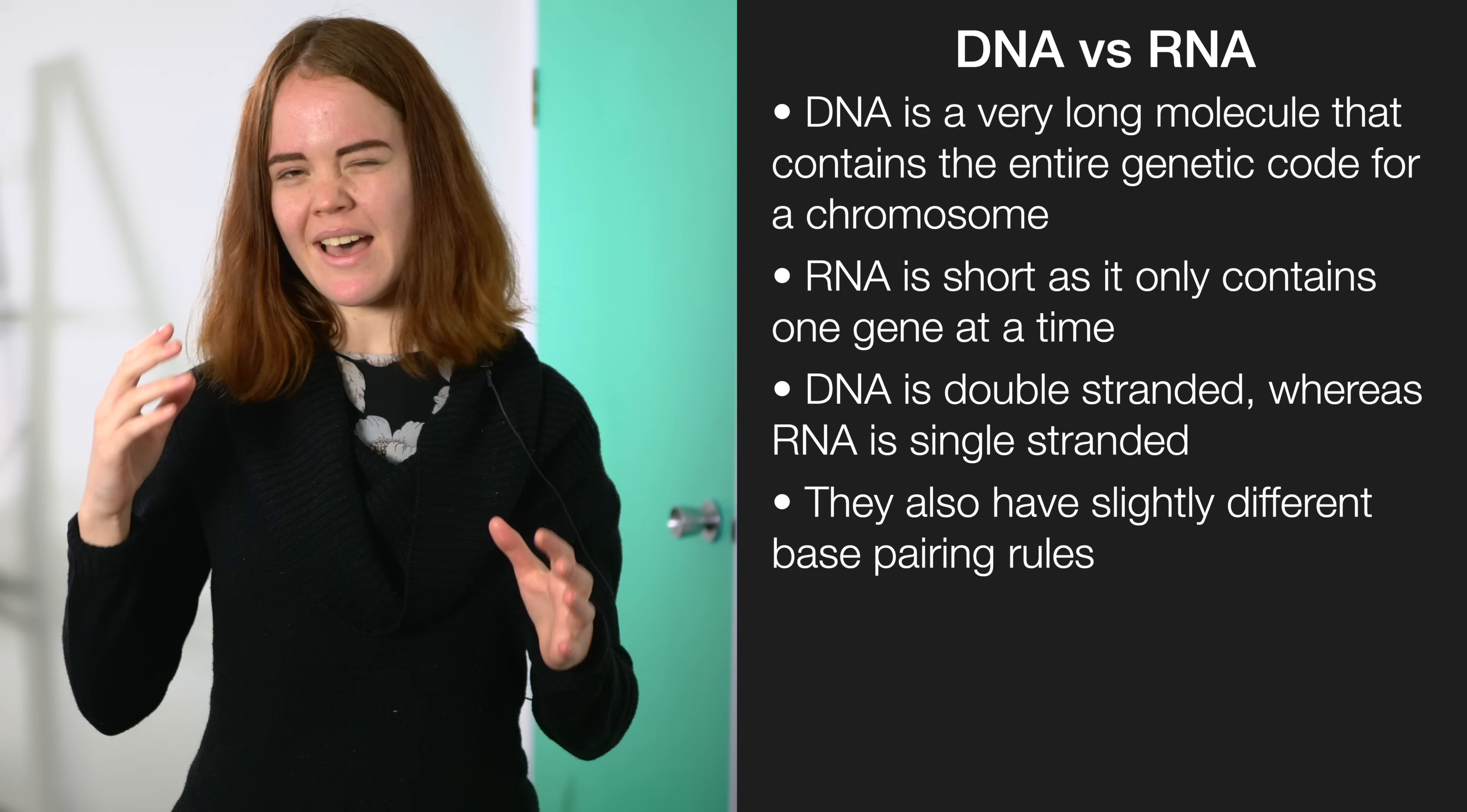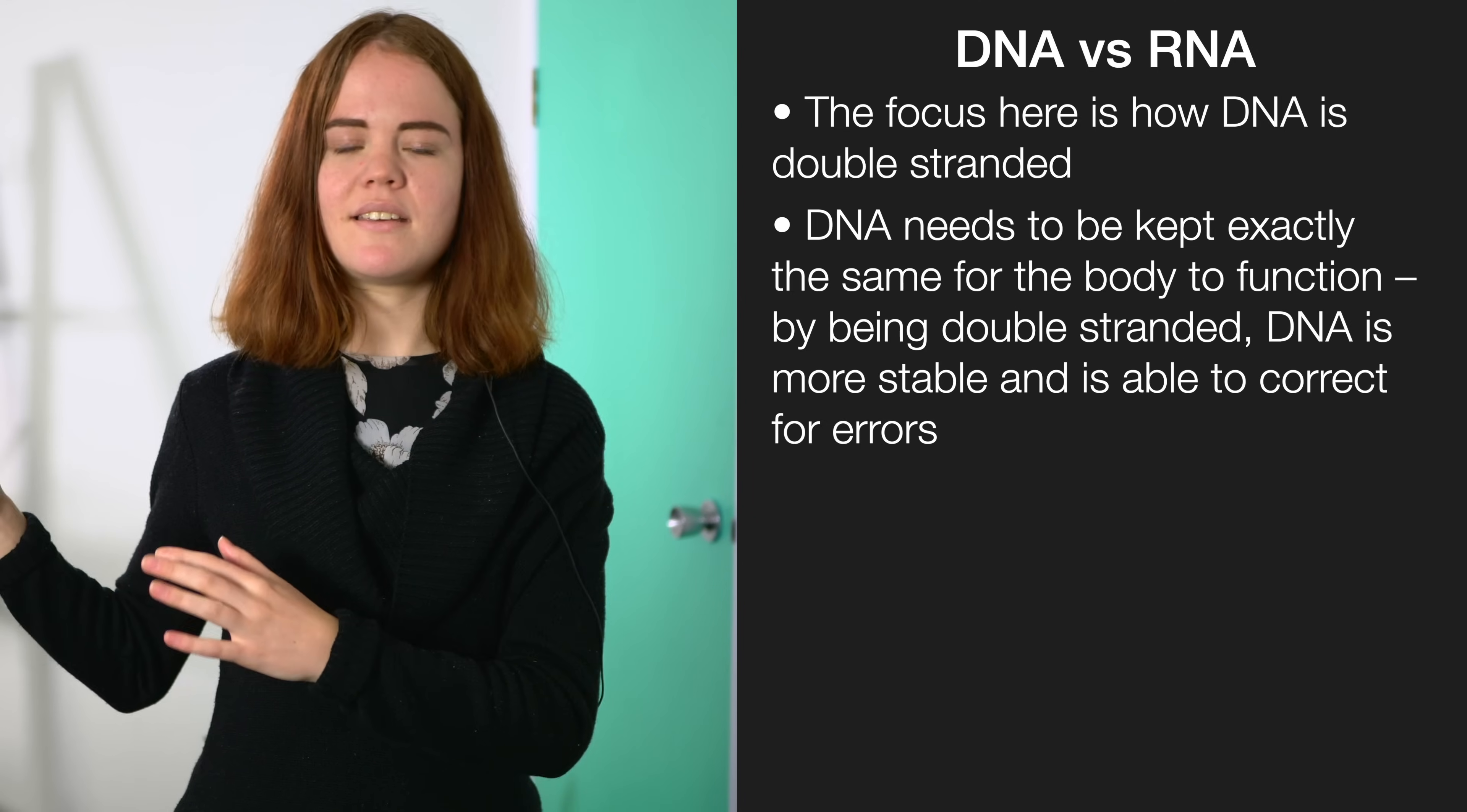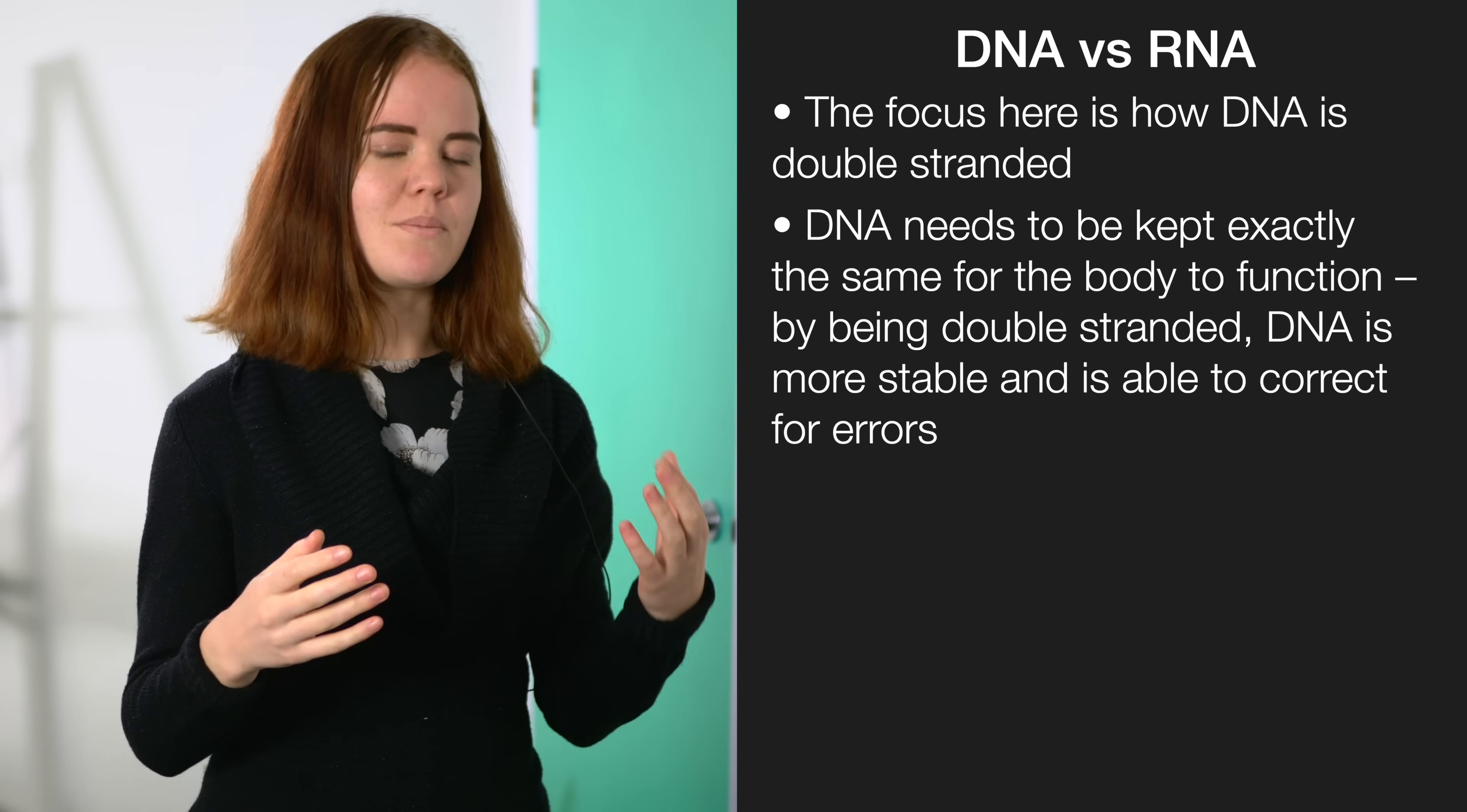When you want to think about how those differences actually came about or what they're for, the main difference that you're going to be focusing on is that double strandedness. So DNA needs to be kept exactly the same because each cell needs to have exactly the same DNA in it for the body to function. So to do that it needs to be able to sort of self-correct if there are any mistakes. Being double stranded makes a molecule more stable and it also means that there's a way to correct for mistakes by using the base pairing rule.